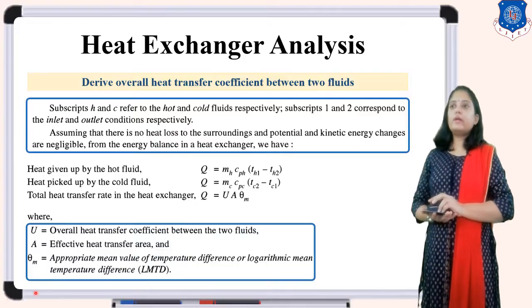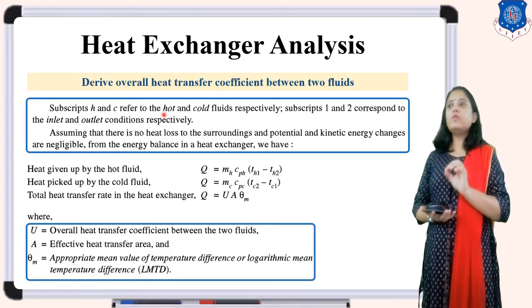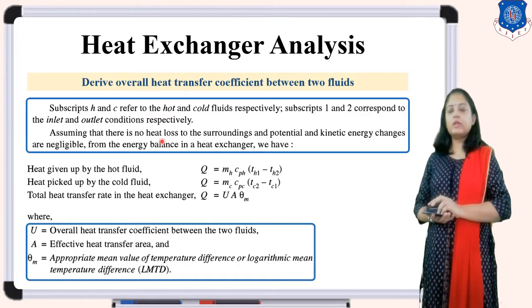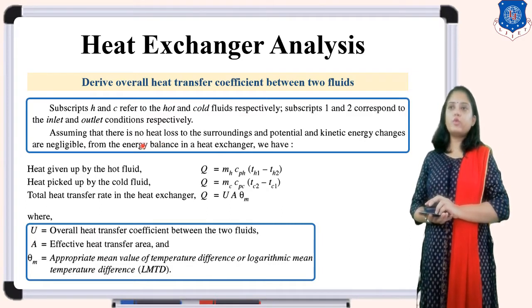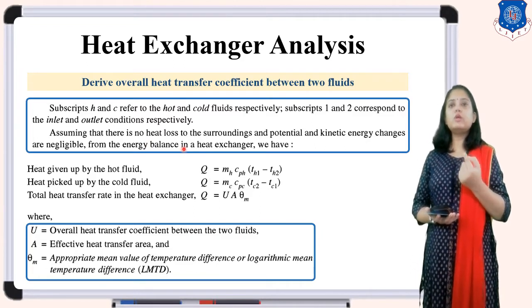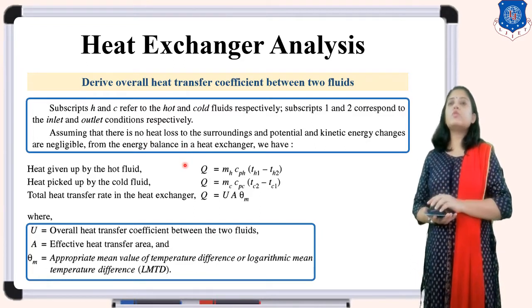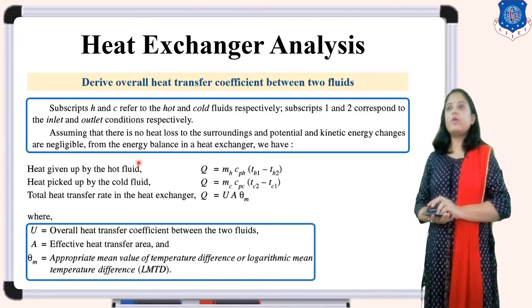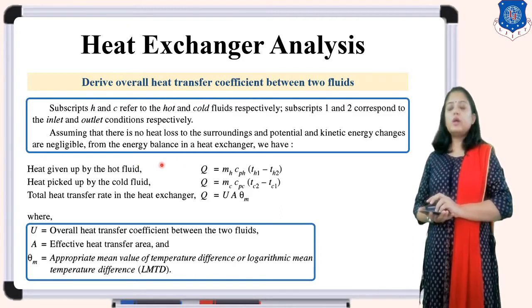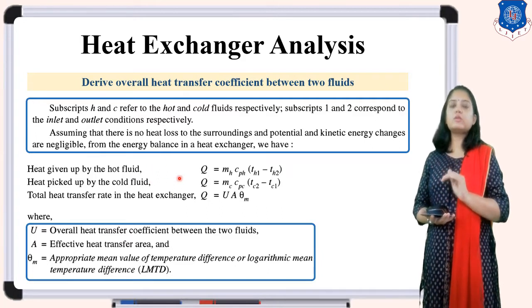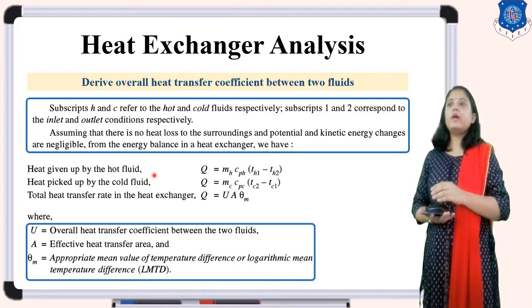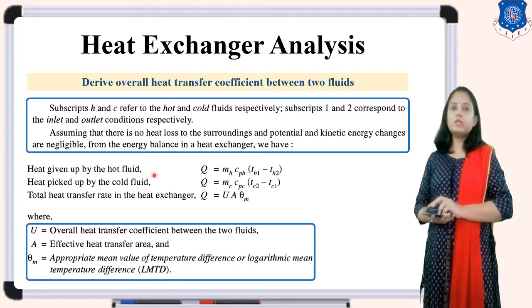The subscripts H and C refer to hot fluid and cold fluid respectively. The numbers 1 and 2 indicate inlet and outlet properties accordingly. We assume no heat loss to surroundings, and no changes due to potential or kinetic energy.